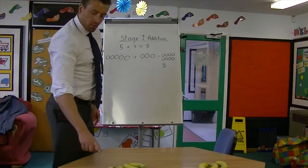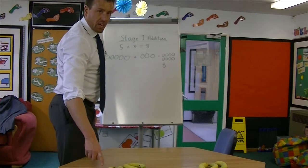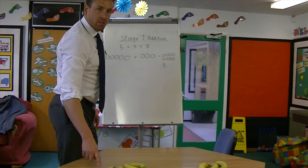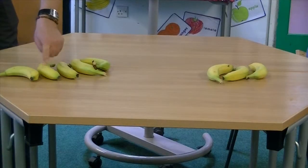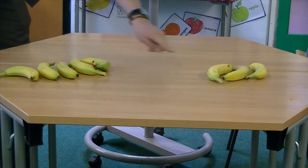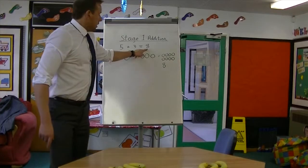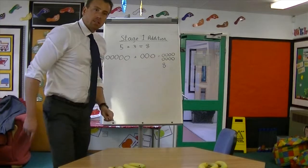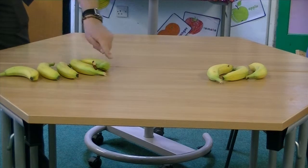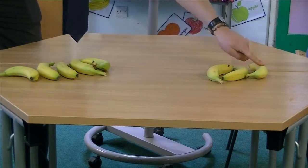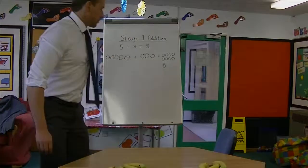And then to count from left to right to the total, pointing and touching each object as they count the number: 1, 2, 3, 4, 5, 6, 7, 8. And then to record that at the end. And then just as good practice, check again: 1, 2, 3, 4, 5, 6, 7, 8. Thank you.